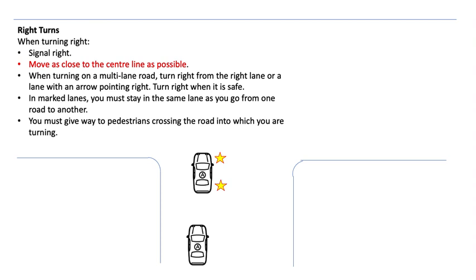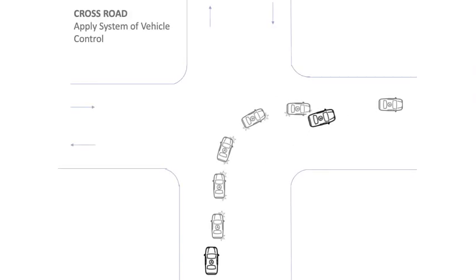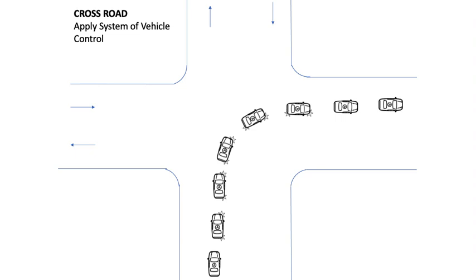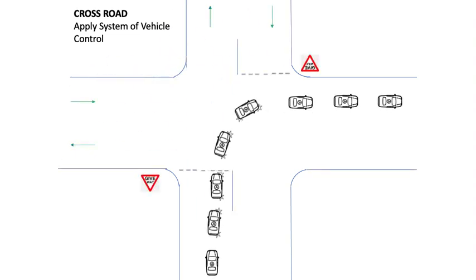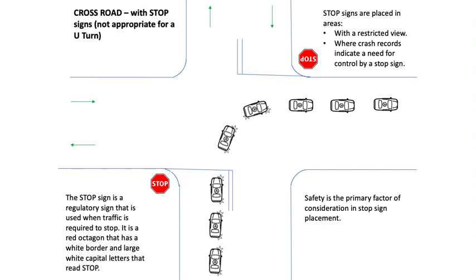Continuing on the theme of right turns: when turning right, signal right. Move as close to the centre line as possible. When turning onto a multi-lane road, turn right from the right lane or a lane with an arrow pointing right. Turn right when it is safe. In marked lanes, you must stay in the same lane as you go from one road to another. You must give way to pedestrians crossing the road into which you are turning. Level 3 training situations include crossroads — right turns, left turns and going straight ahead — as well as crossroads with give way signs and crossroads with stop signs.